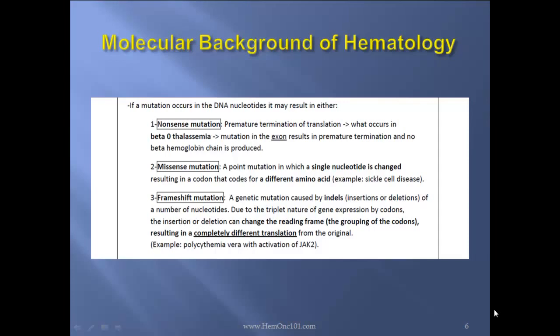And last, a frameshift mutation — a genetic mutation caused by indels, insertion or deletion, of a number of nucleotides. Through the triplet nature of gene expression by codons, the insertion or deletion can change the reading frame, the grouping of codons, resulting in a completely different translation from the original — for instance, the JAK2 activation in polycythemia vera.